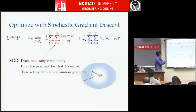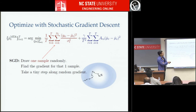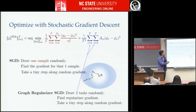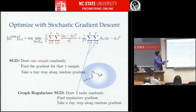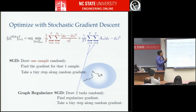Standard stochastic gradient descent handles too many samples, but our regularizer is pairwise on parameters — potentially a billion-by-billion number of pairs. In our work, we also apply stochastic gradient descent to these graph regularizers: draw two tasks randomly, calculate the gradient for those two tasks, and take a tiny step. There's theoretical work to nail down how these two kinds of stochastic gradients need to work together, but basically this works well and lets you handle really large-scale data.